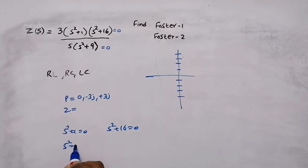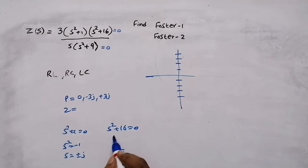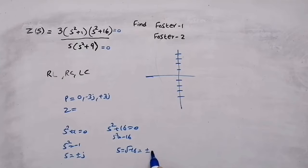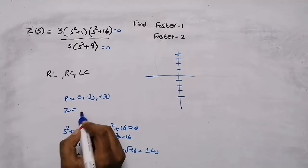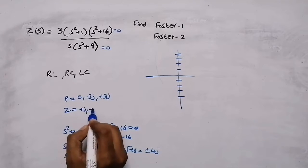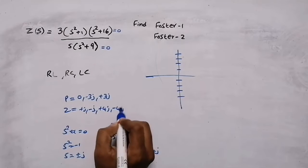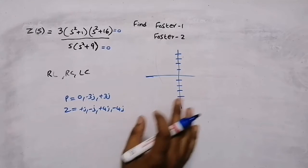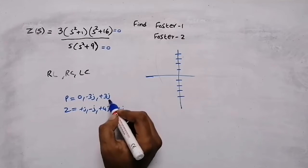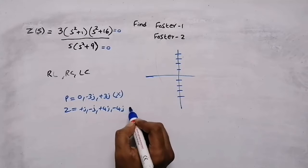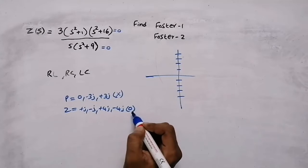From s squared plus 1 equal to zero we get s equal to plus or minus j. From s squared plus 16 equal to zero we get s equal to plus or minus 4j. So the zeros are at plus j, minus j, plus 4j, and minus 4j. Now plot these points in the graph: poles are plotted with a cross mark and zeros with a circle.